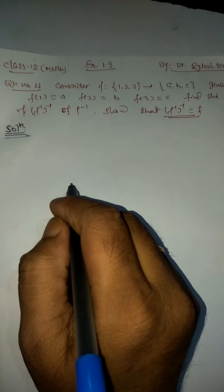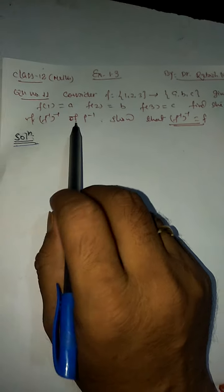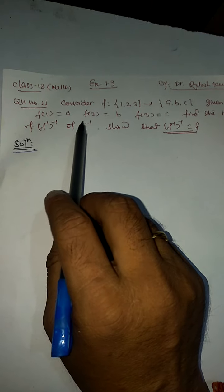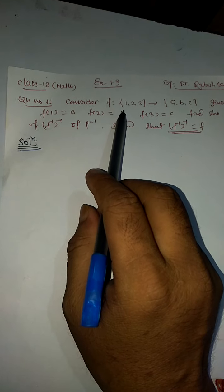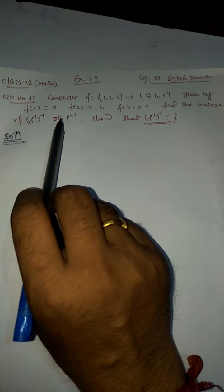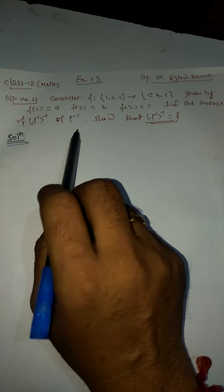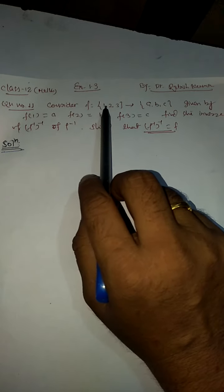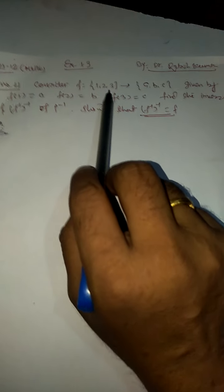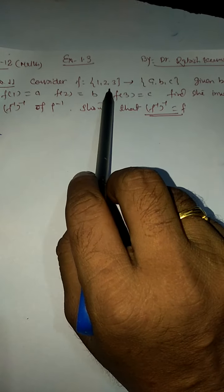Now I am going to start question number 11 from the same exercise 1.3 and this question is very very important. The question is: consider f such that {1,2,3} → {a,b,c}.